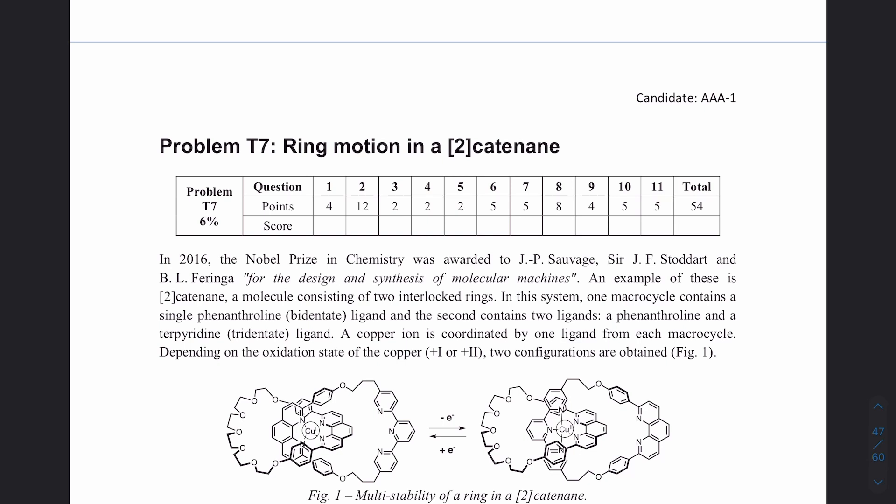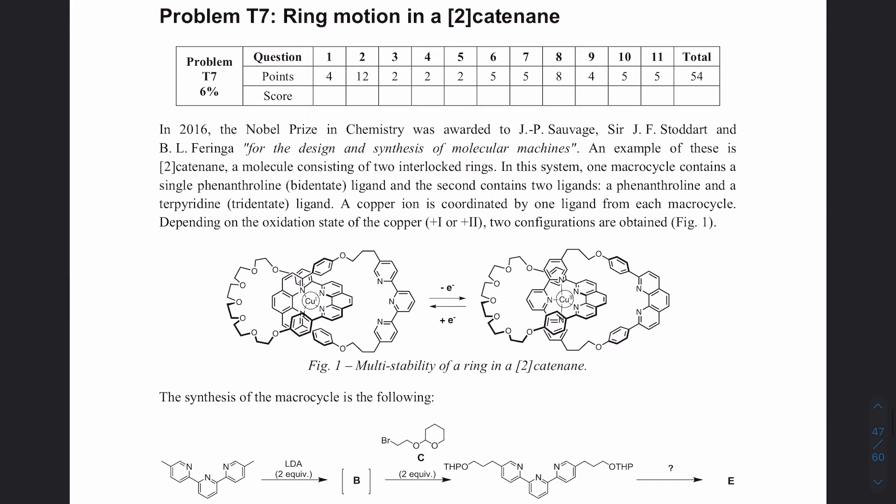Hello and welcome back to another organic chemistry video. It's been six months, but I'm back. Today we're taking a look at International Chemistry Olympiad problem seven from 2019, called 'Ring Motion into Catenane.' It's going to be a fun one — it's obviously organic.